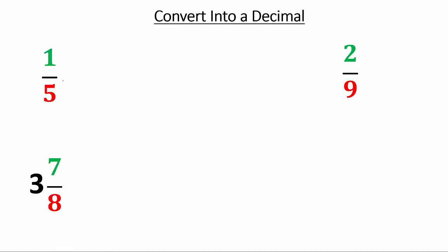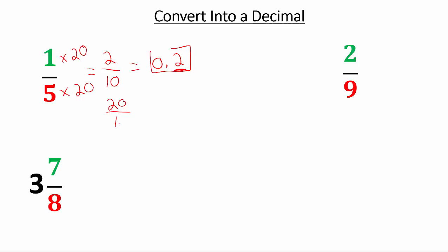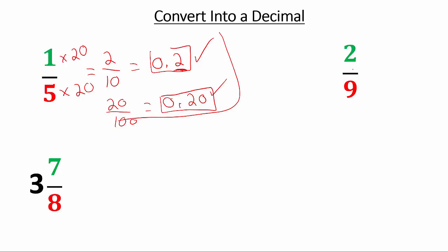Pause the video and try the next one yourself. For 1/5 — do we need long division? No, because we can multiply the denominator by 2 to get a power of 10. Multiply both numerator and denominator by 2: we get 2 tenths, which is 0.2. Some of you may have multiplied by 20 to get 20/100, which equals 0.20 — also correct.